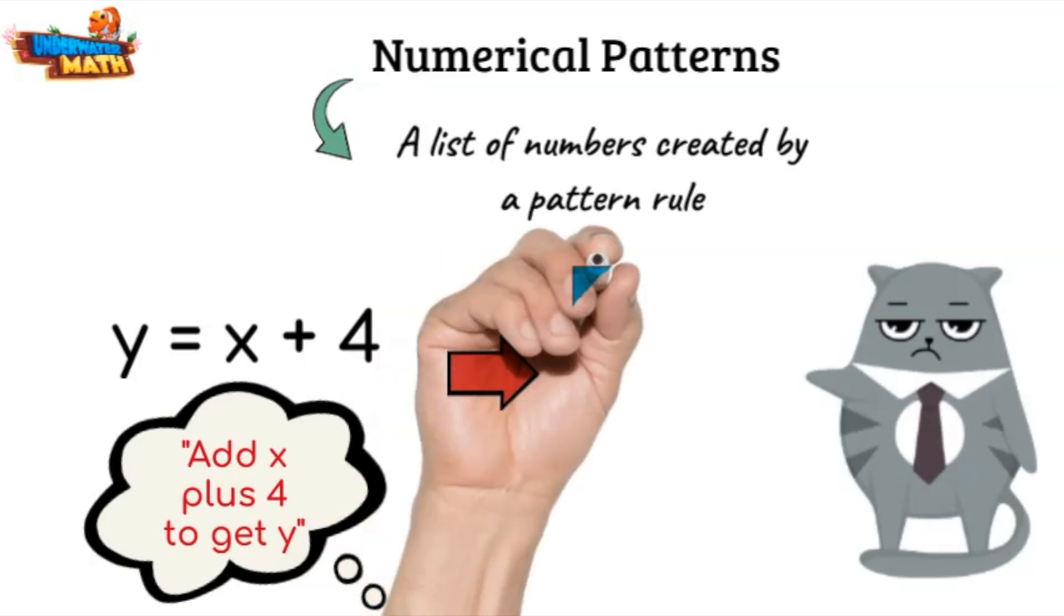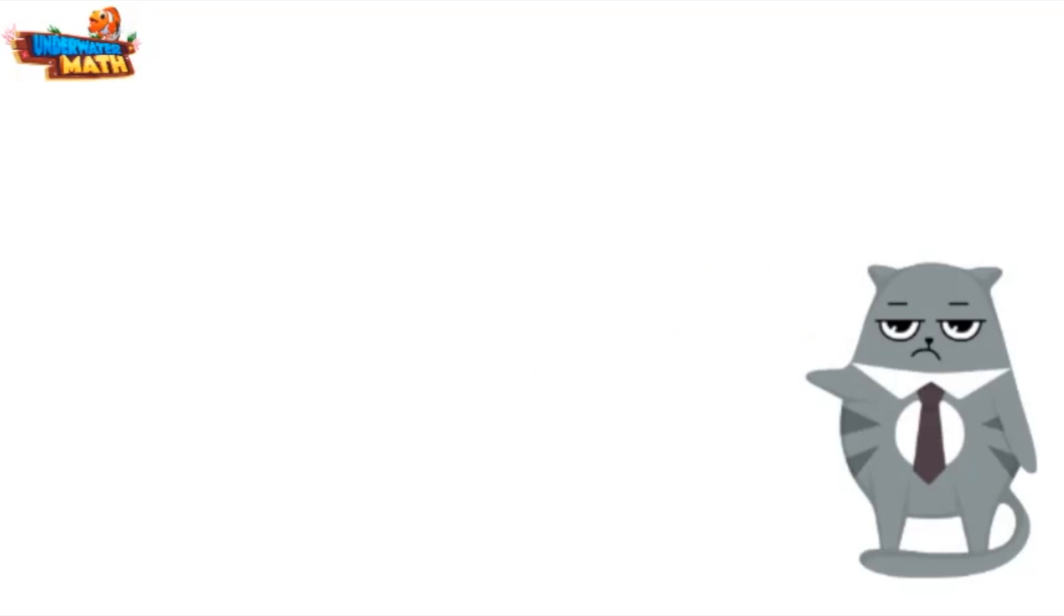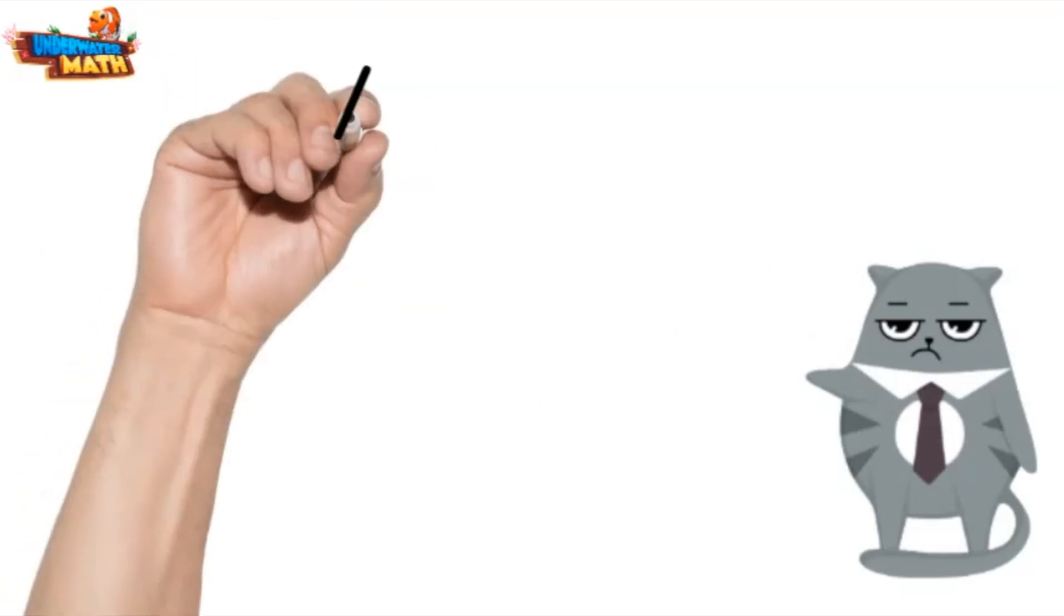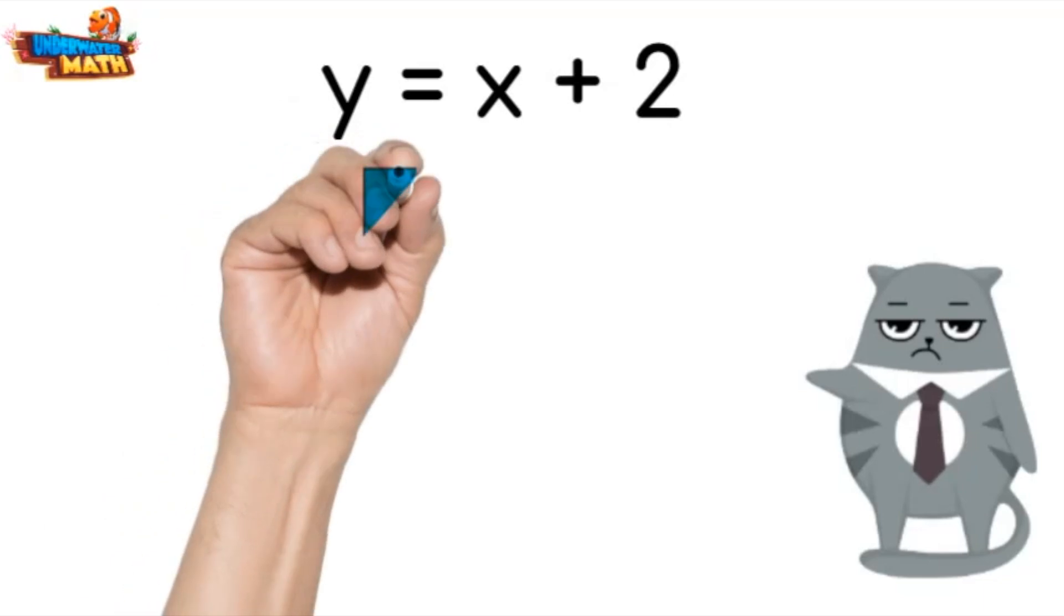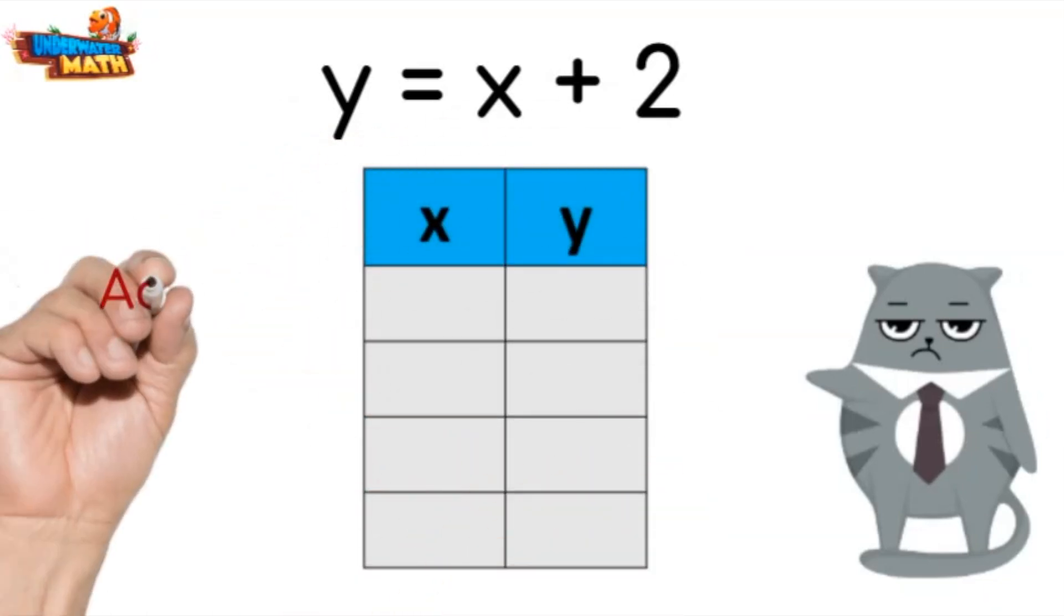Yes, we can use that rule to create a pattern table and also create a graph. Can you give me an example? Good idea, let's try a problem together. First we will create a table for the rule y equals x plus two. This rule means that we will add two to the number under the x column to get the y column.